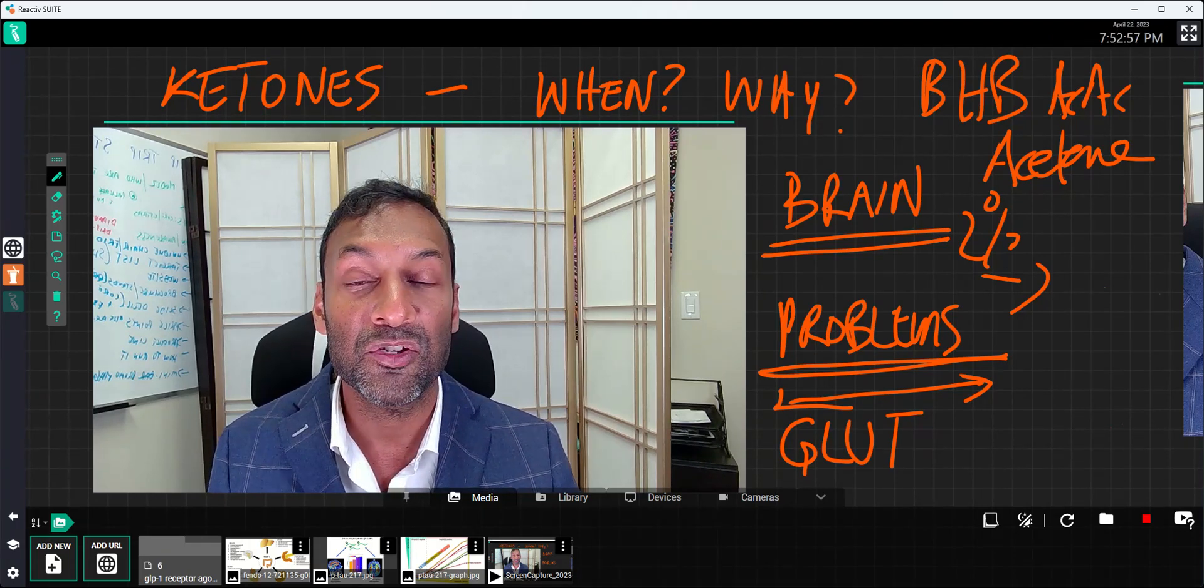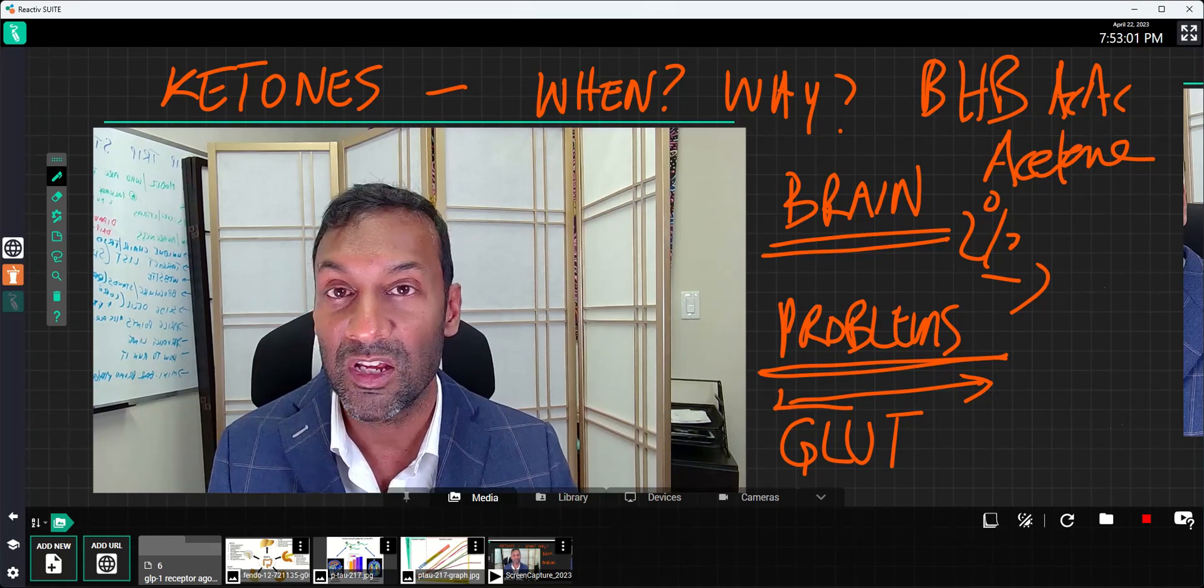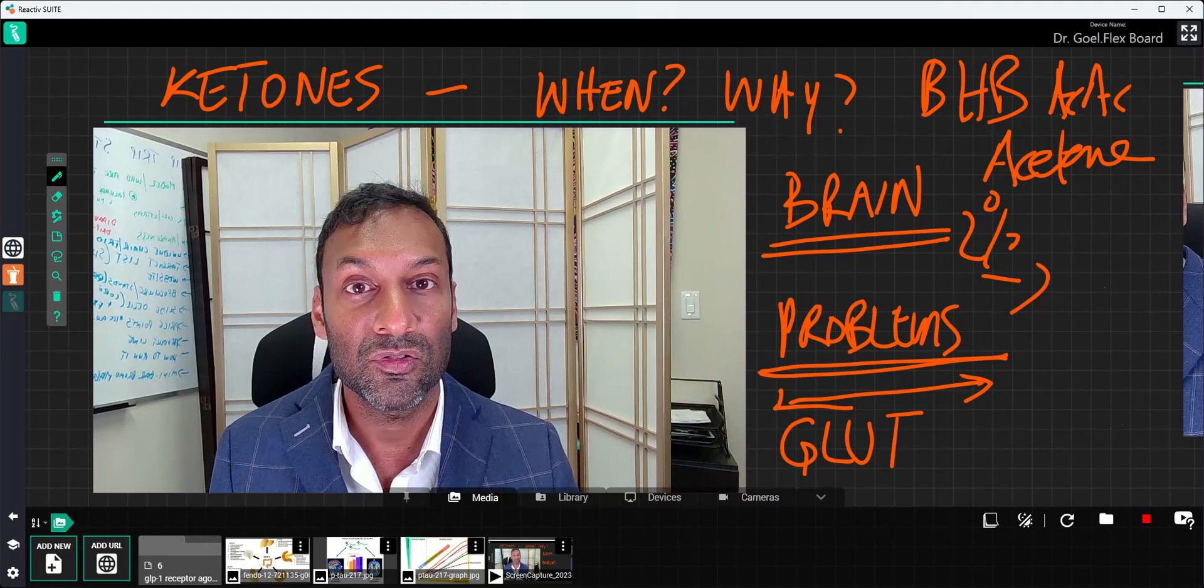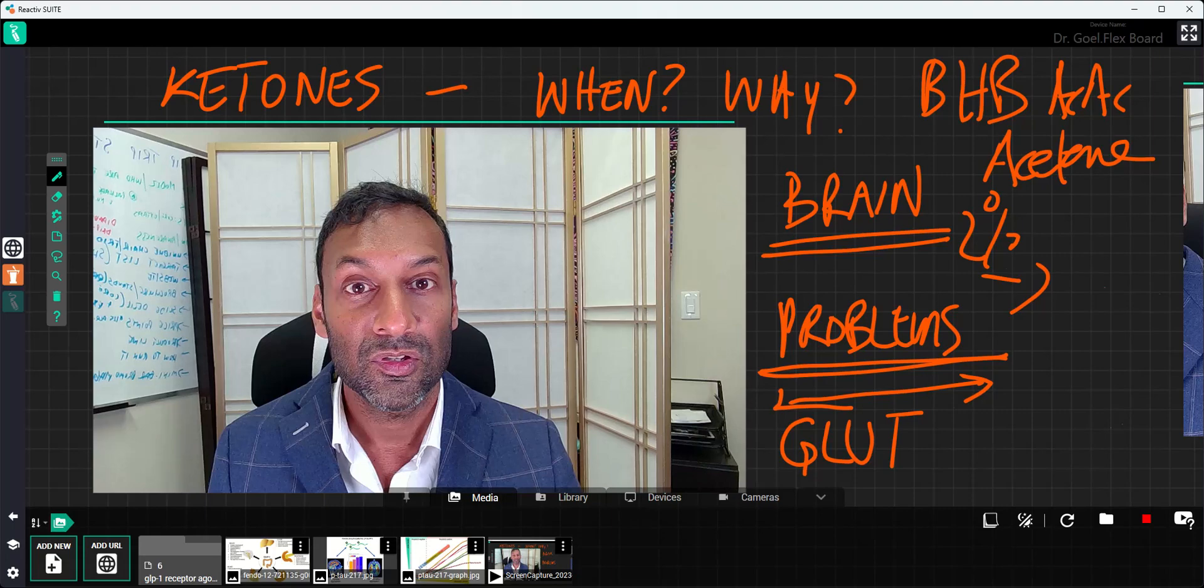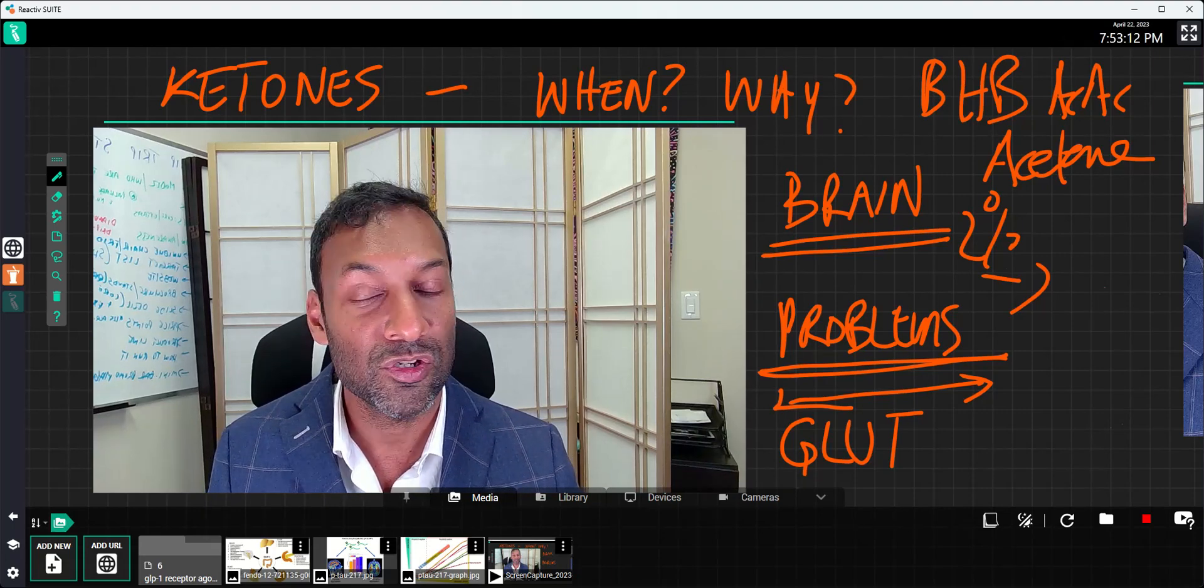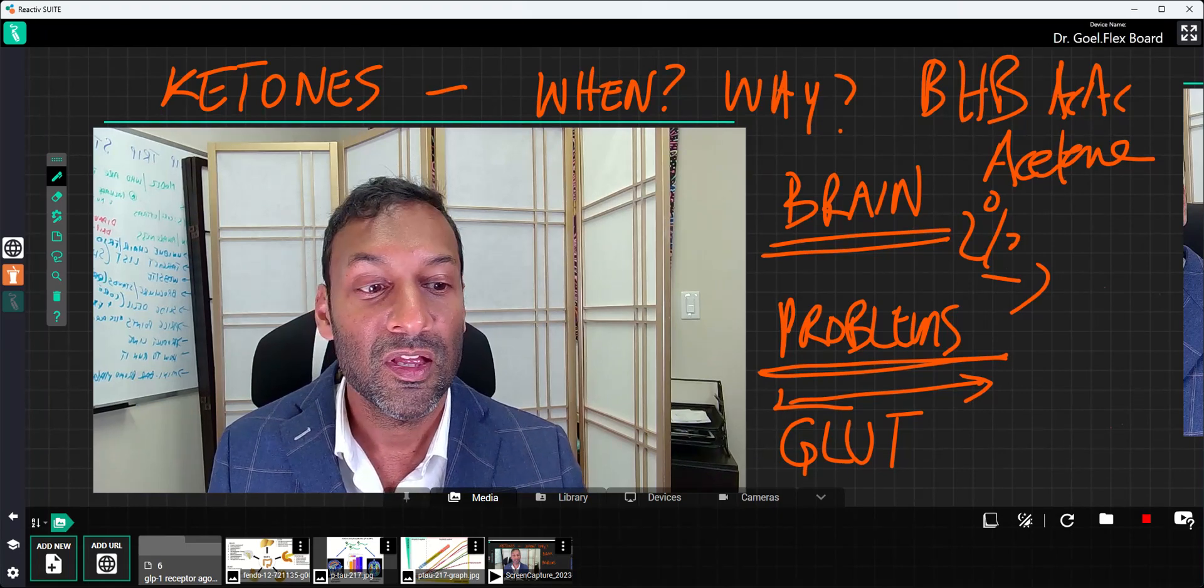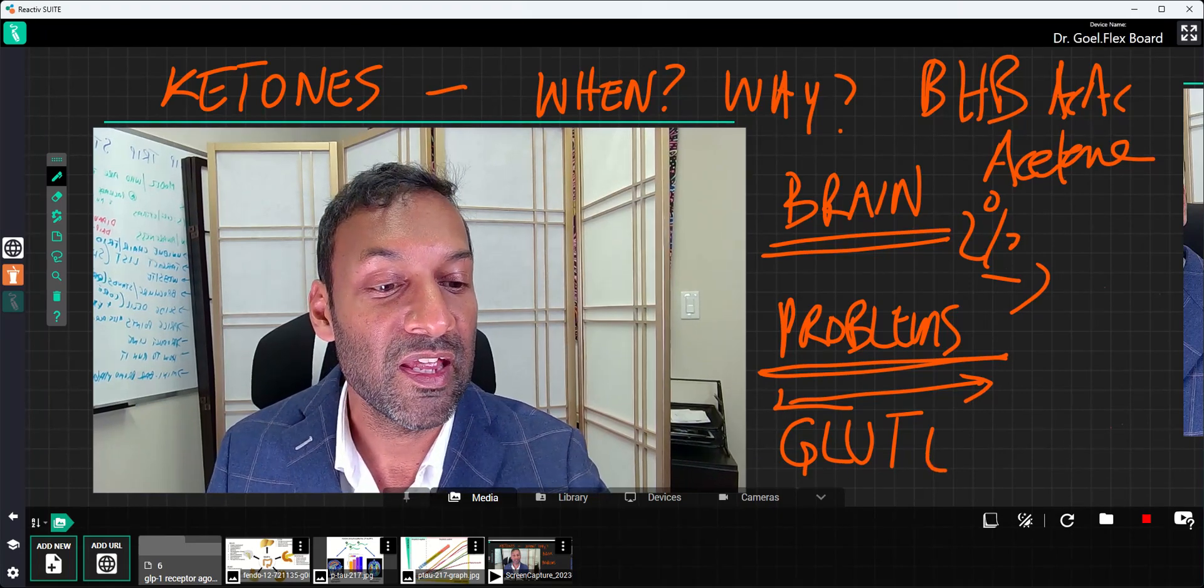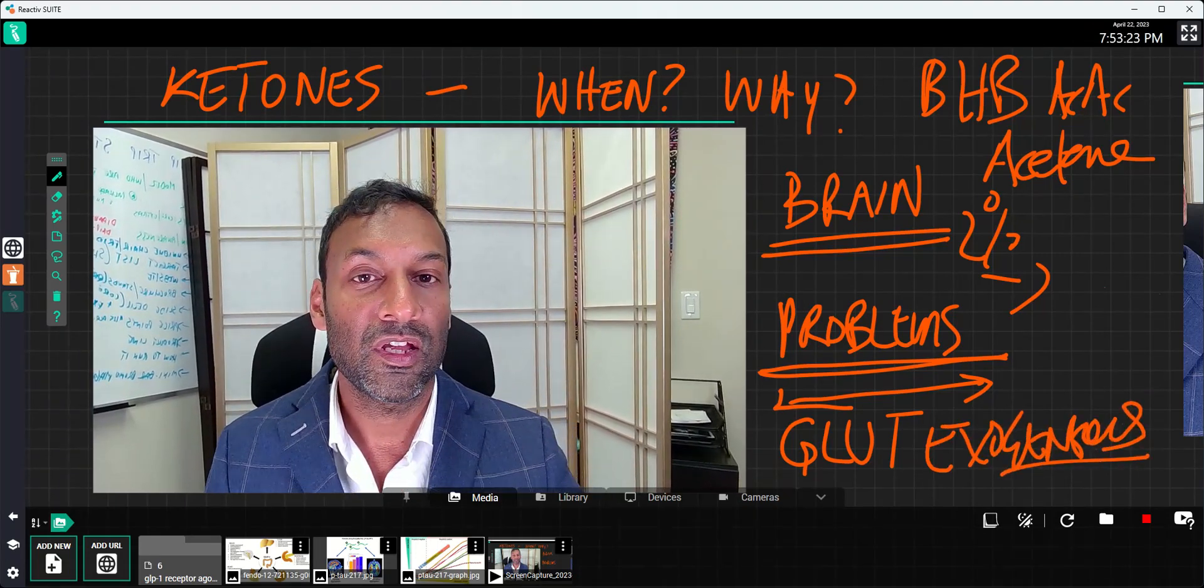In that case, you can imagine that the brain is starving for energy and that can cause all types of havoc if the neurons don't have enough energy to fuel the functions they need to do. So that's where ketones come in because the ketone function of uptake of energy is not affected. It doesn't seem to be affected. And that's why people are using exogenous ketones to help.